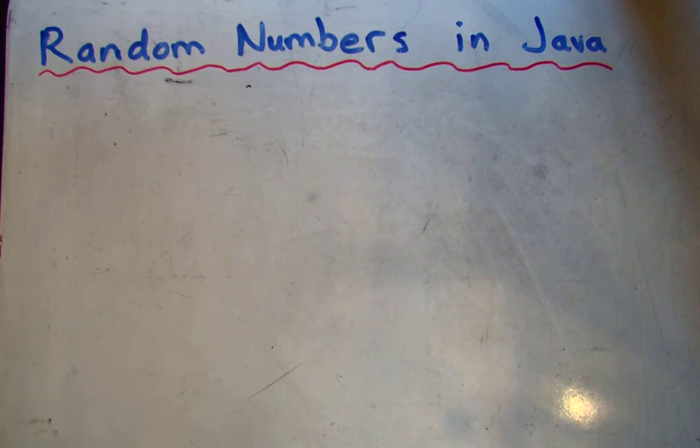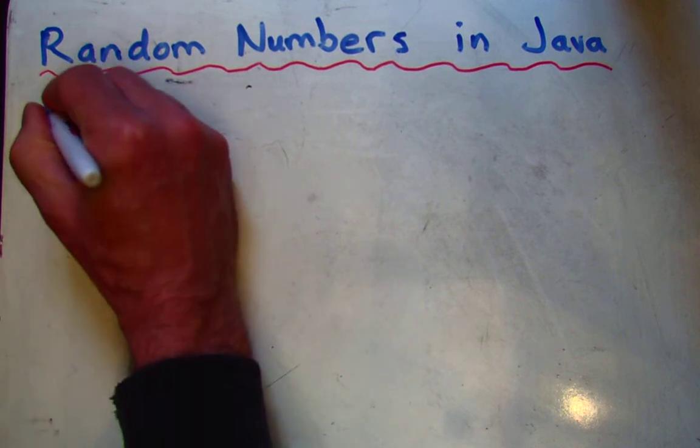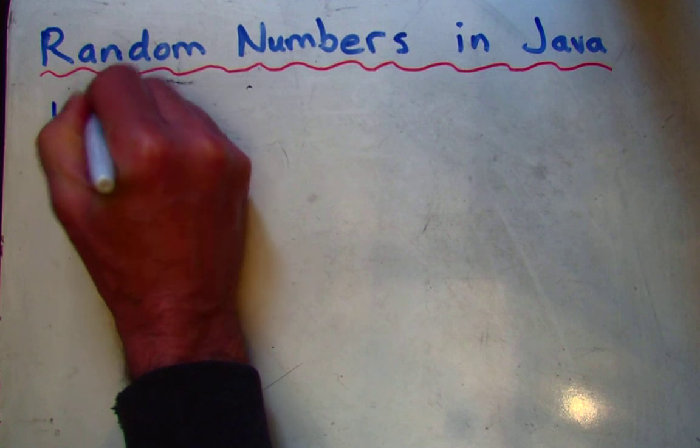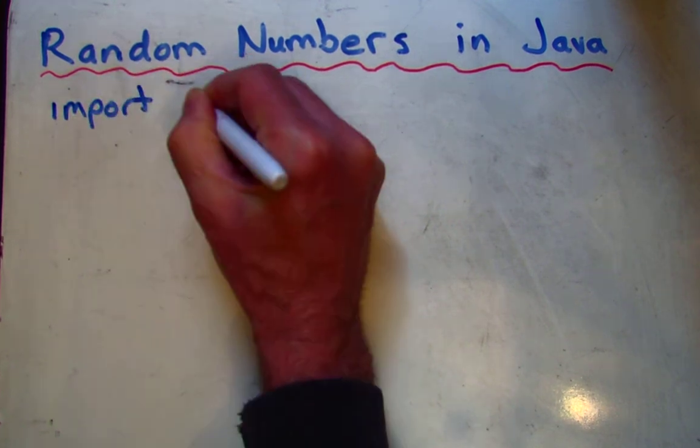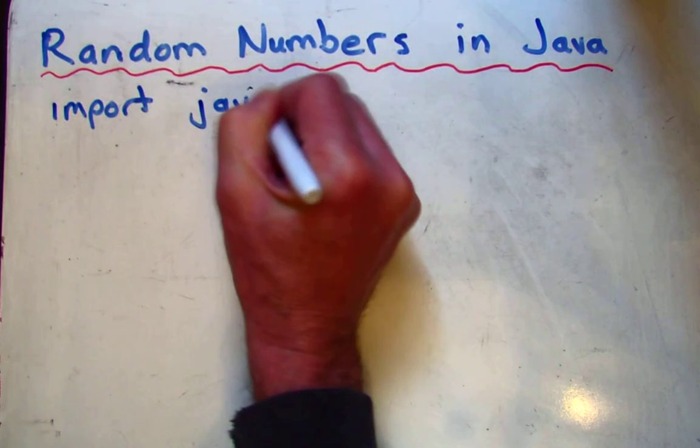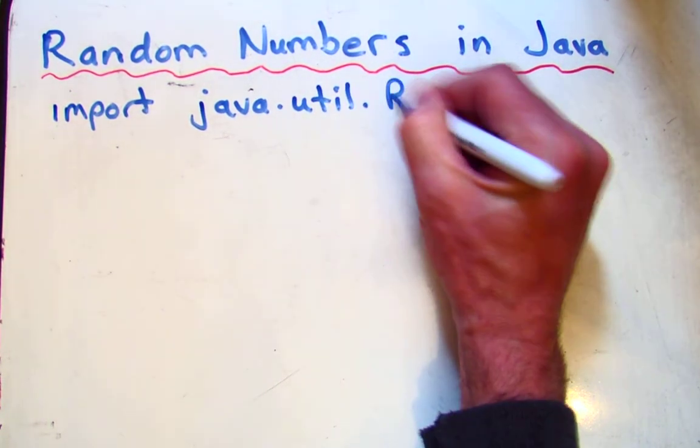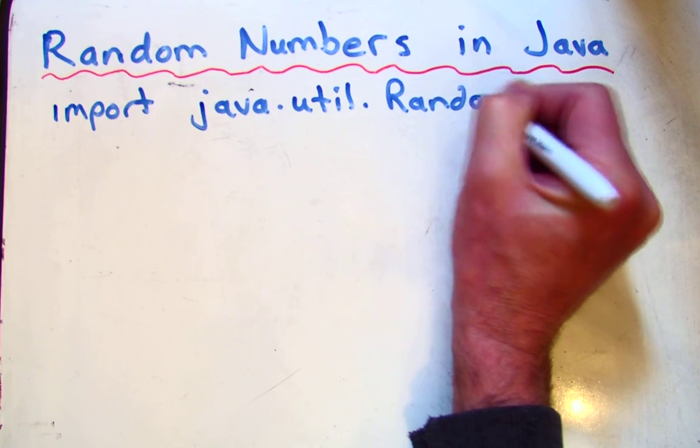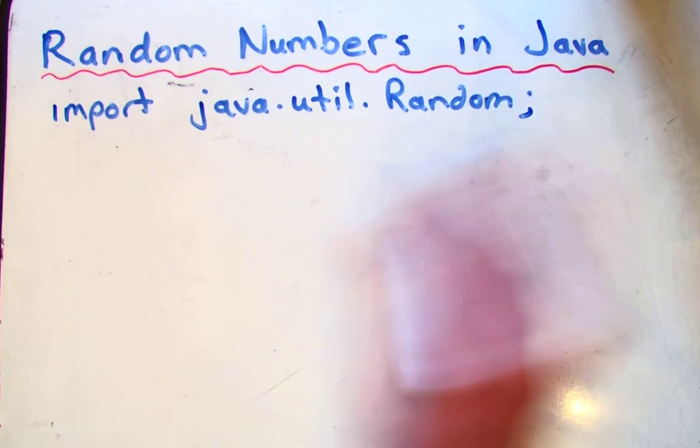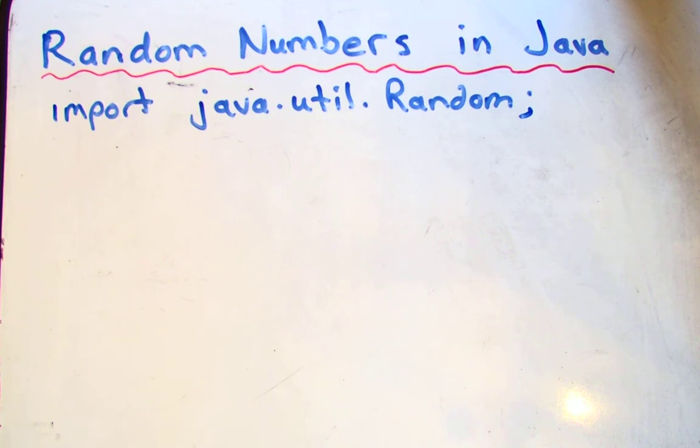So, making random numbers, the first thing you have to do is import from java.util, which stands for utilities, the random class, starting with a capital R. So once you do that at the top of your program, you have access to this random class.